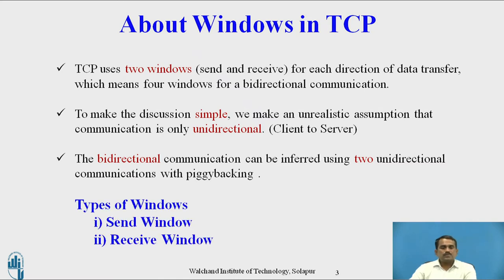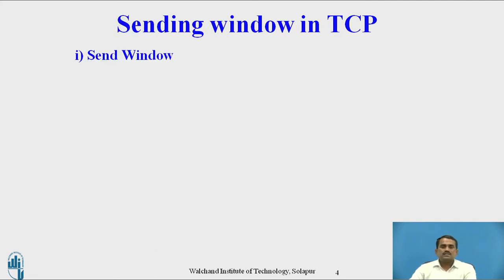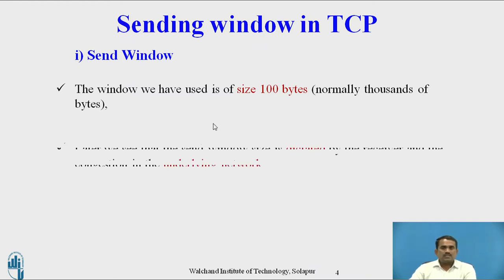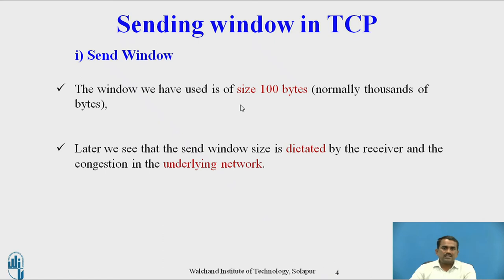Next, there are two main types of windows: the first one is Send window and Receive window. We will first discuss the Send window. The window size we use is 100 bytes — normally thousands of bytes are used, but for this discussion we use 100 bytes.